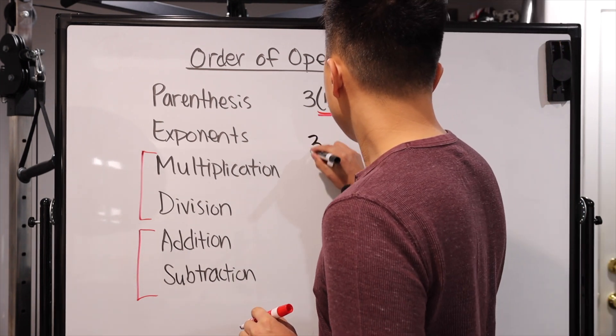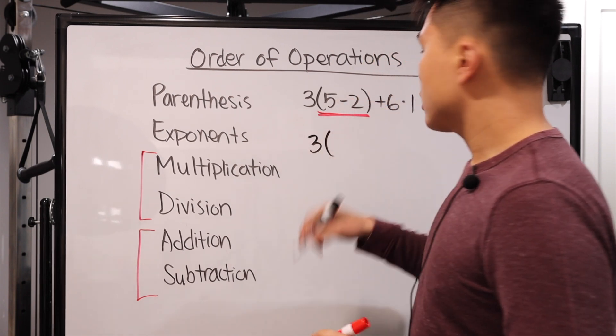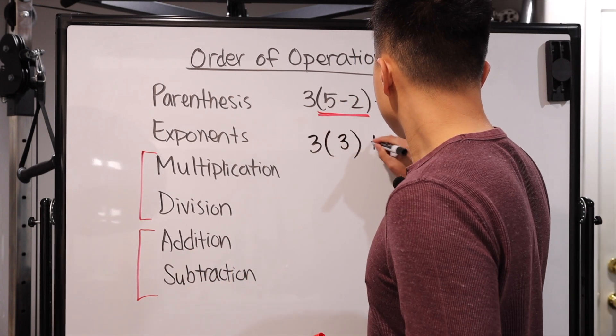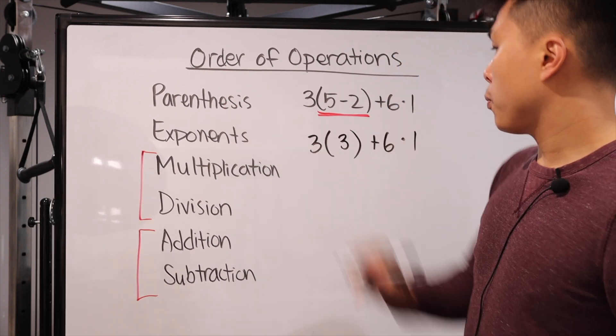So there's the parentheses. We do everything inside the parentheses first. So basically, now we have 3 times, and inside it's going to be 5 minus 2, which is going to be 3, plus 6 times 1. So that's our parentheses.